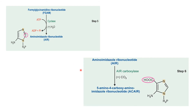Carbon dioxide is inserted as C6 of the purine ring, yielding CAIR — carboxyaminoimidazole ribonucleotide. This is a special reaction: although it is a carbon dioxide fixation (carboxylation) reaction catalyzed by AIR carboxylase, it is biotin-independent and does not require any ATP.